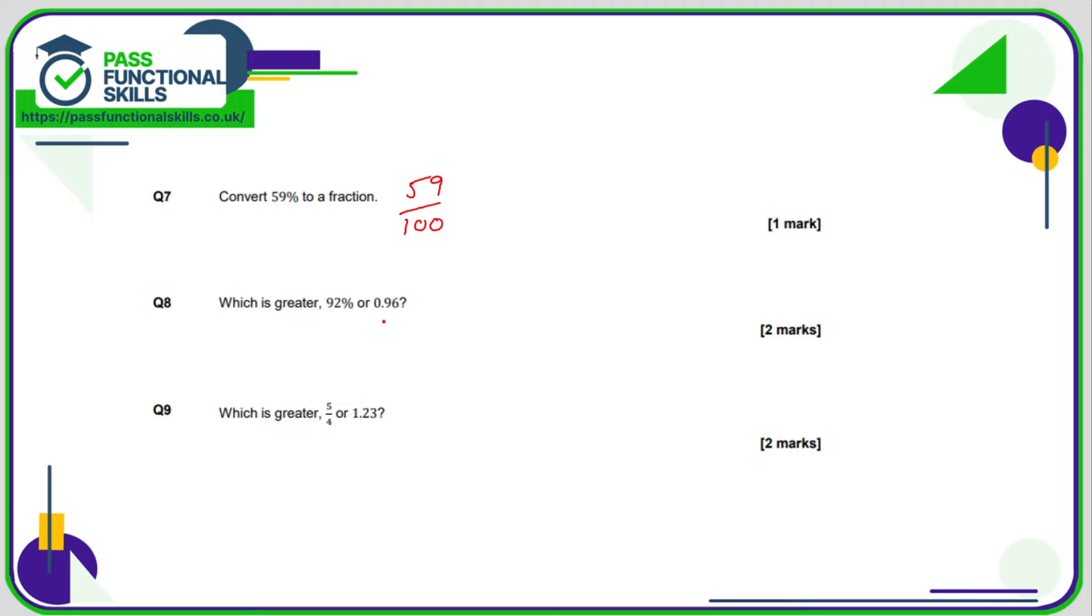So 0.96 times by 100 is 96%. That is obviously greater than 92% so therefore 0.96 is greater than 92%.